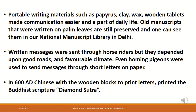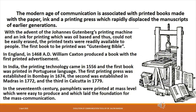All these means of communication were essential for the survival of human beings who were organizing themselves into societies and needed some method for interpersonal and intercommunal exchange of information. In 600 AD, the Chinese used wooden blocks to print letters and printed the Buddhist scripture Diamond Sutra. The modern age of communication is associated with printed books made with paper, ink, and a printing press, which rapidly displaced the manuscripts of earlier generations. With the advent of Johannes Gutenberg's printing machine and an oil-based ink that could not be easily erased, printed texts were readily available to people. The first book to be printed was the Gutenberg Bible.